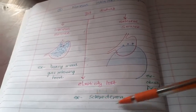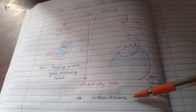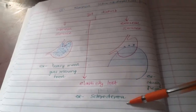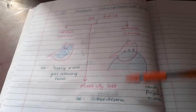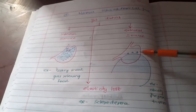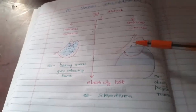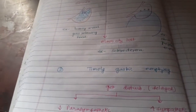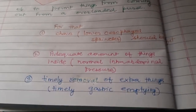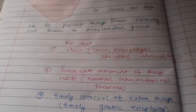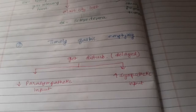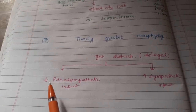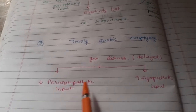A connective tissue disorder known as scleroderma results in loss of elasticity of the stomach and the whole GI tract. The third factor is the timely removal of extra things, or timely gastric emptying, which gets disturbed if there is a decrease in gastric motility.